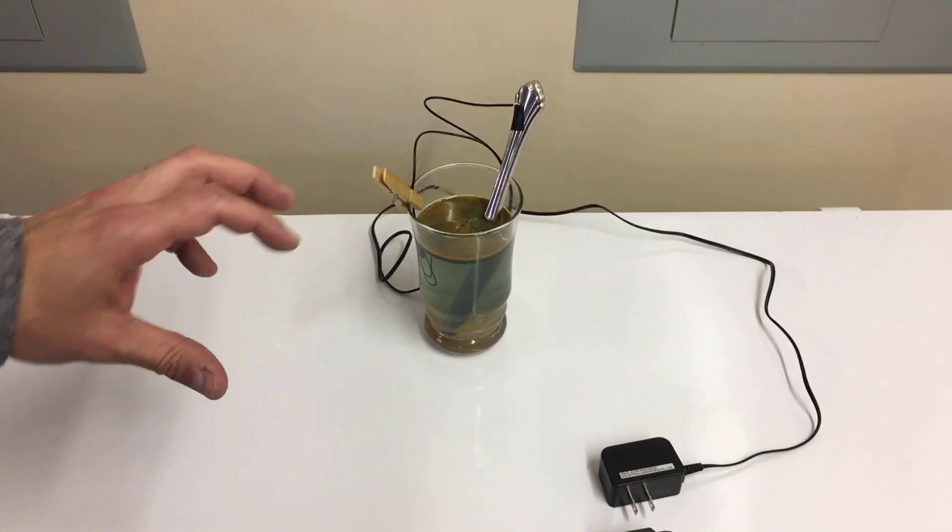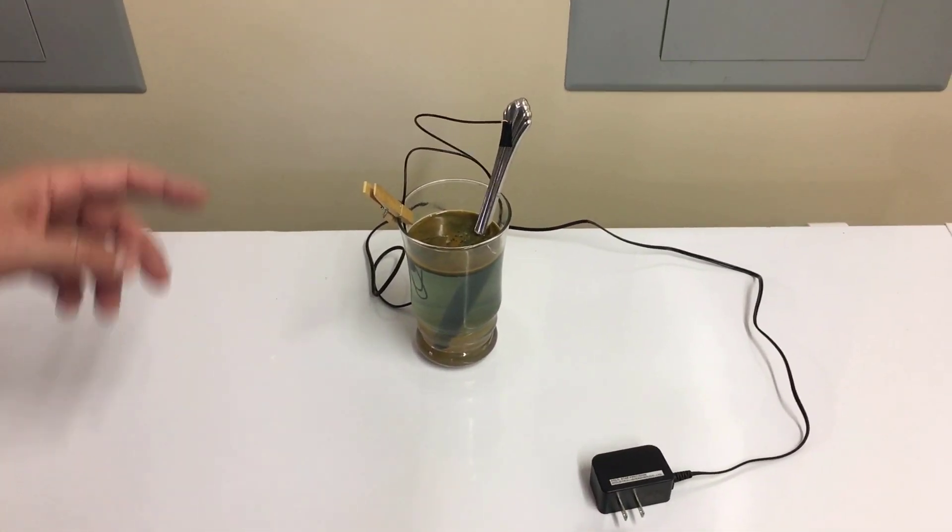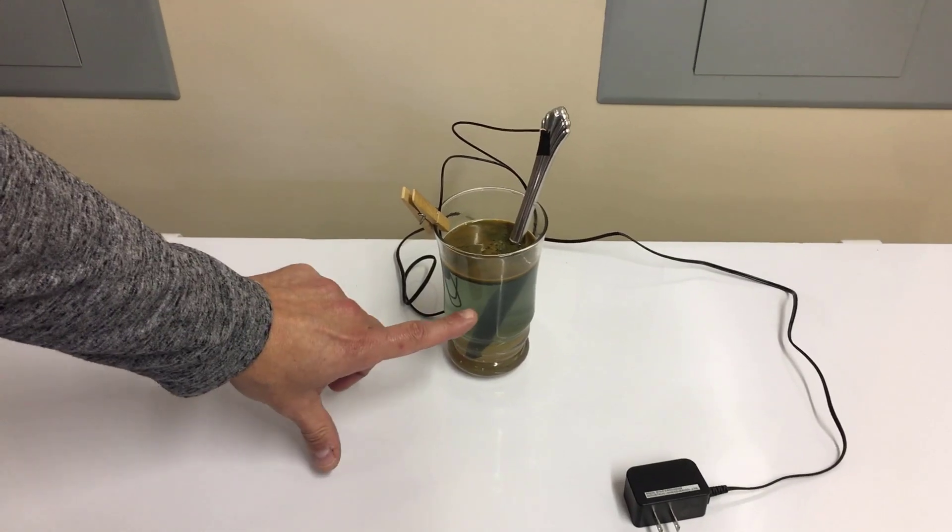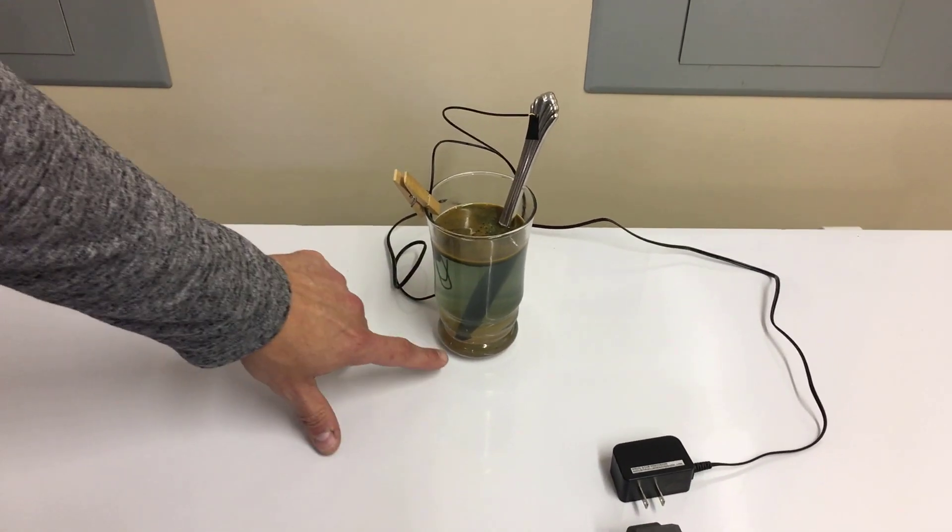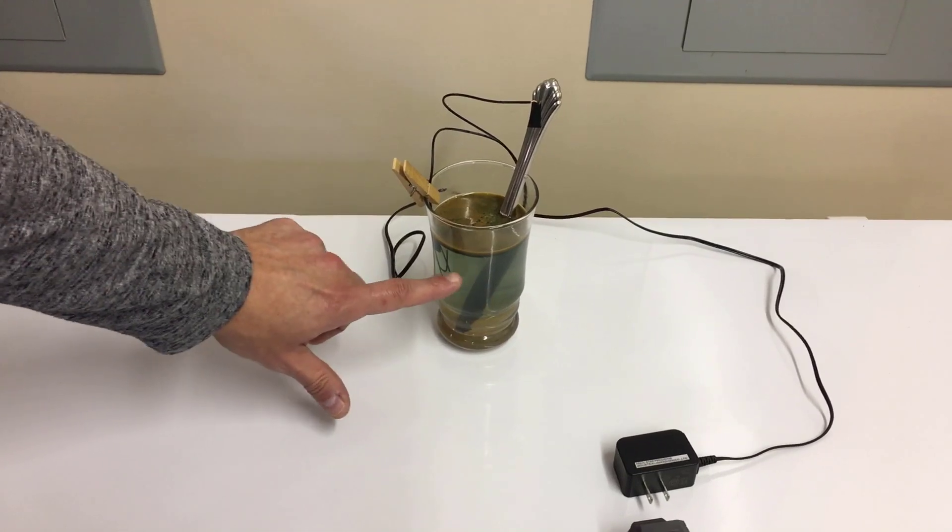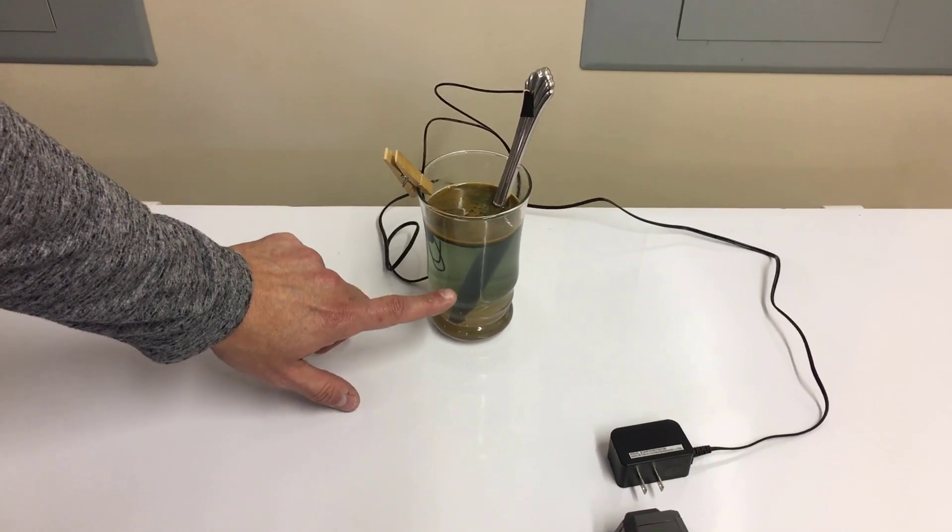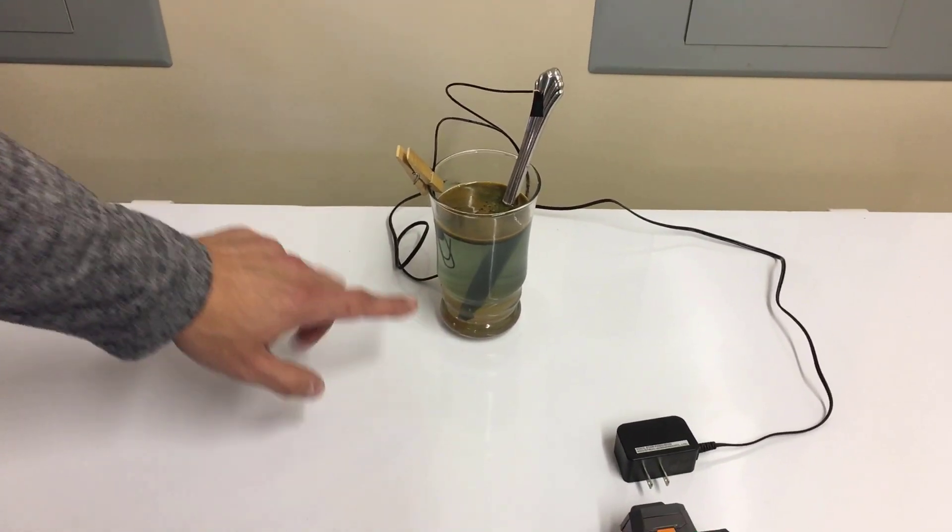So we've let this set for ten minutes with this running to see what it would do. And it's come out with brown goop on the top. And it's kind of like greenish, bluish, and clear in the middle. And then it's kind of yellowish at the bottom.